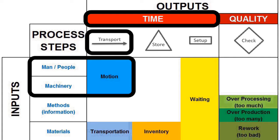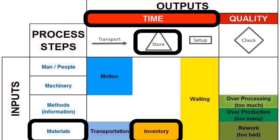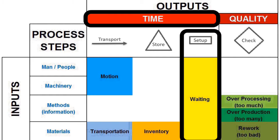Four wastes are time-related. For the step of transportation, if people, tools, or machines need to be displaced, this is the waste of motion. If the materials need to be displaced, this is the waste of transportation. When the materials are stored, this is the waste of inventory. During the setup step, some inputs are on hold until the others are ready — this is the waste of waiting.